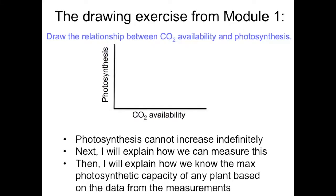Back in Module 1, I asked you to think about how photosynthesis can change as we see an increase in CO2 availability, and you might have thought that the relationship would look something like a simple linear rise. But this relationship is not possible at all, and today we'll talk about why that is and how we can measure it.